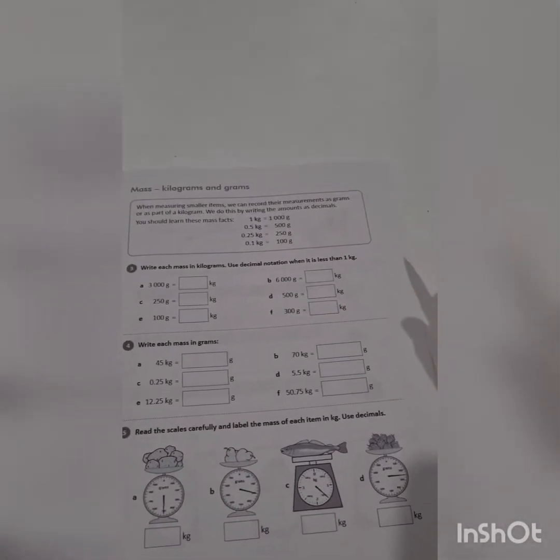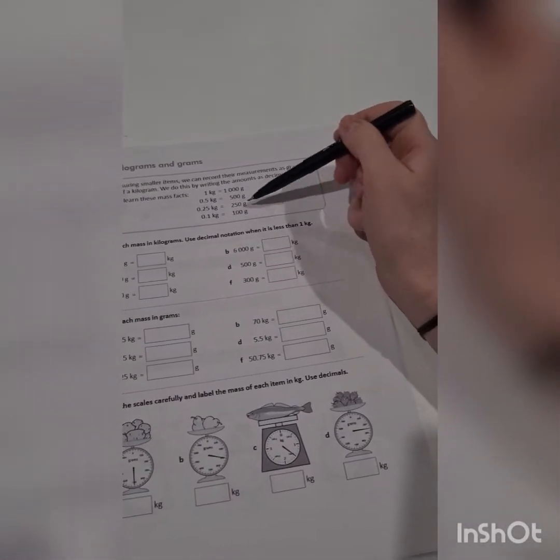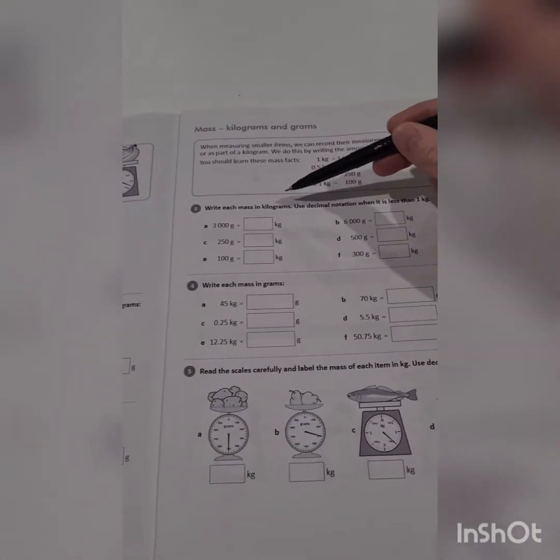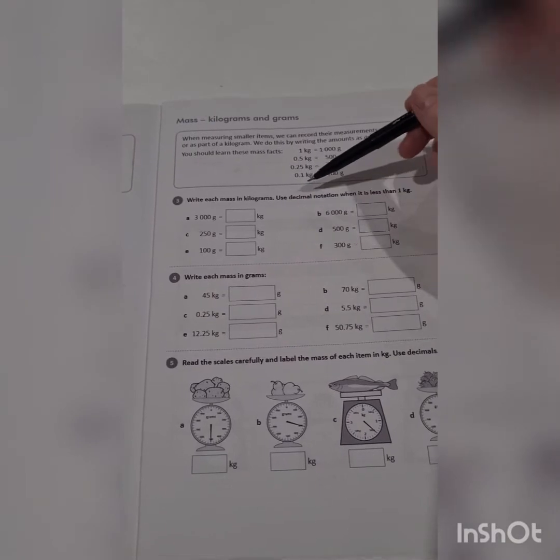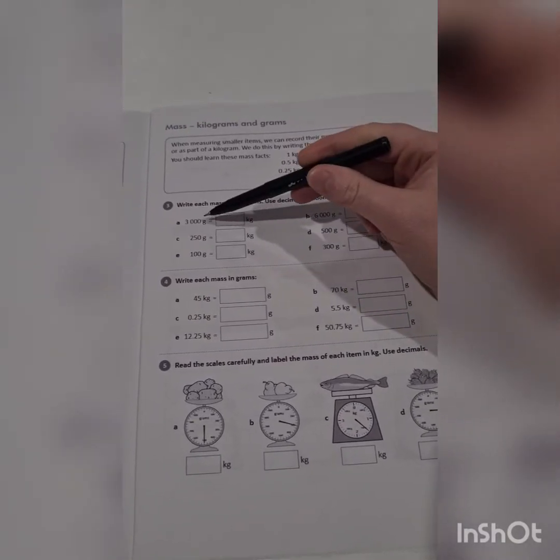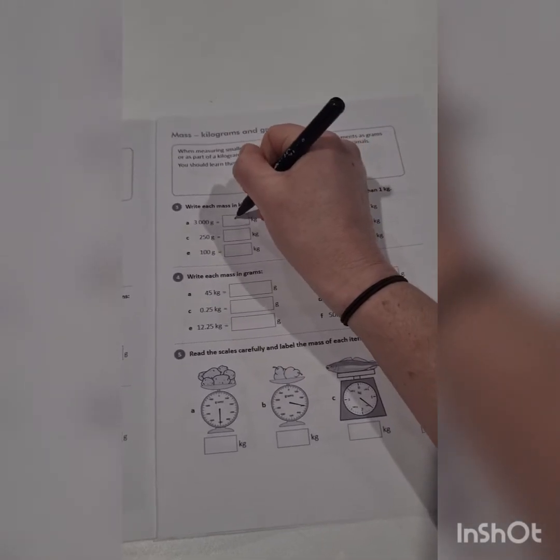Let's have a look over at the other page. We've got a few shorthands to help you with the page today. Write each mass in kilograms. Use decimal notation when it is less than 1 kilo.